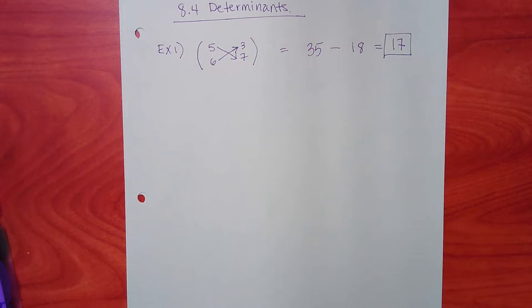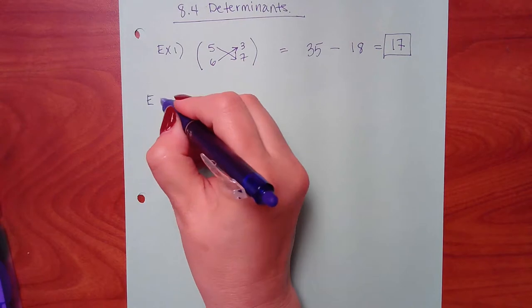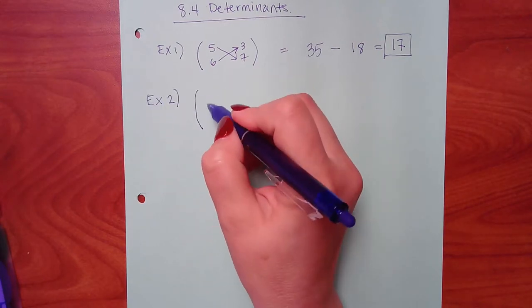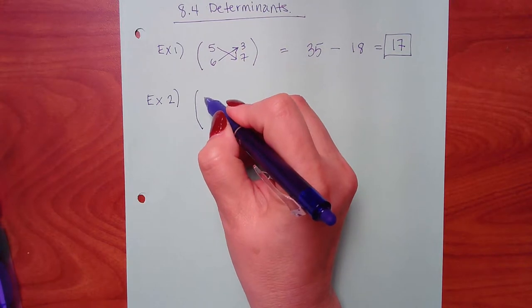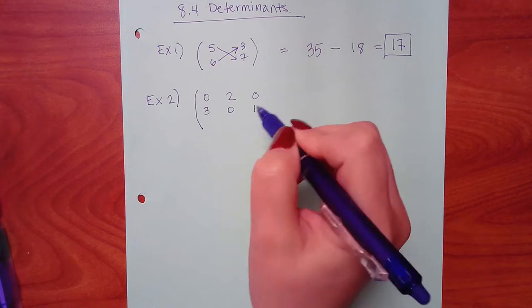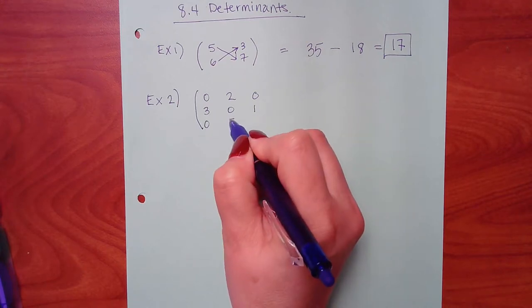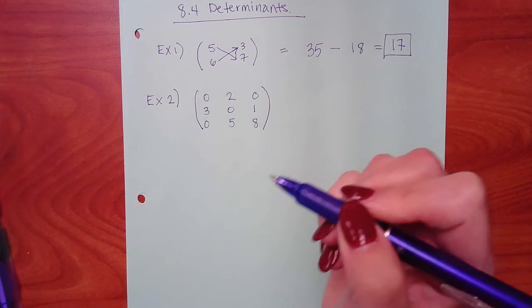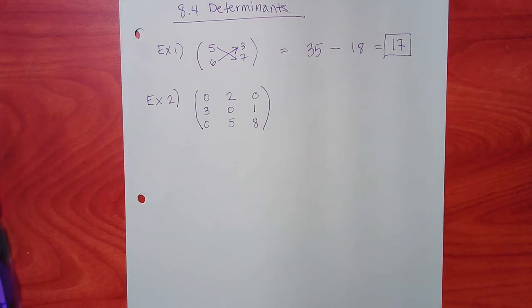The 3 by 3s are a little bit harder. A cheater way to do it - it's not how the books teach you, but it works. So let me give you a matrix here. And when we get to 8.8, I promise this will come back. So it's not like this is the only example you'll see because we will have to do more determinants when we get to section 8.8.